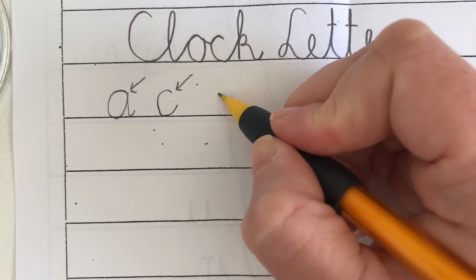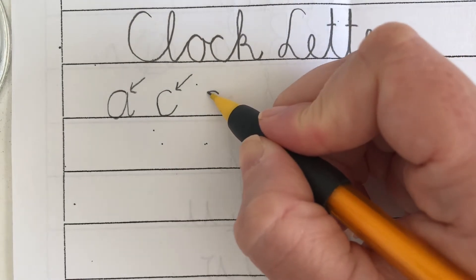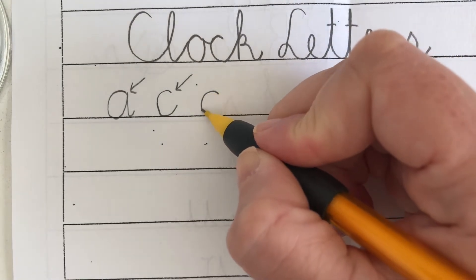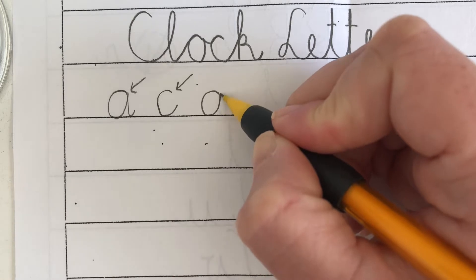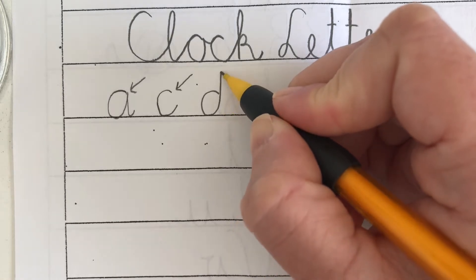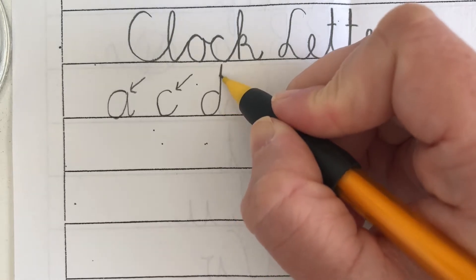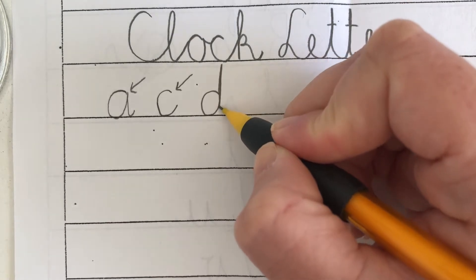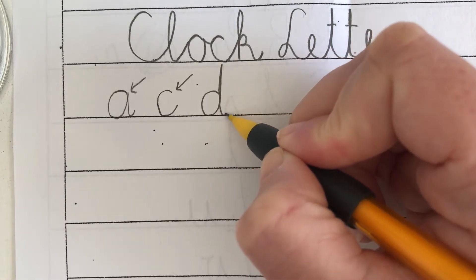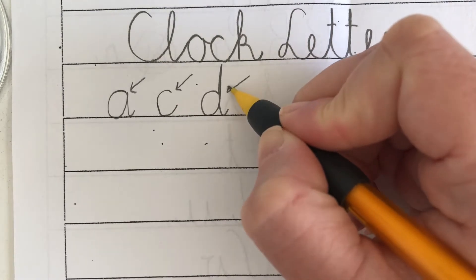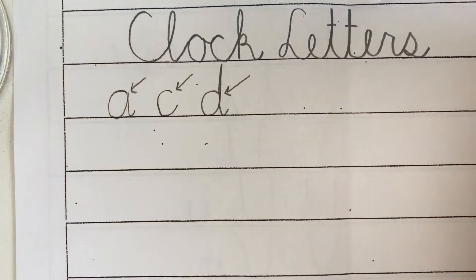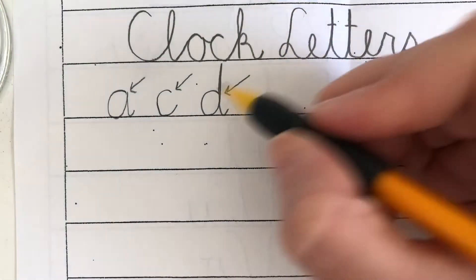D — up and around the clock face, down to the baseline, straight up just below the top line, pull straight down to the baseline, finishing with a tiny upswing. Start D at two on the clock.